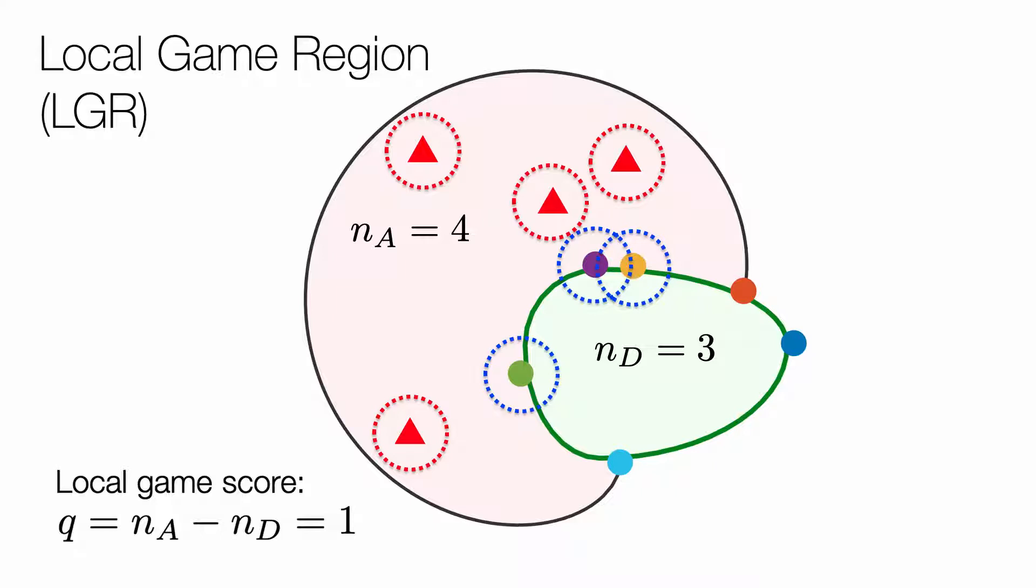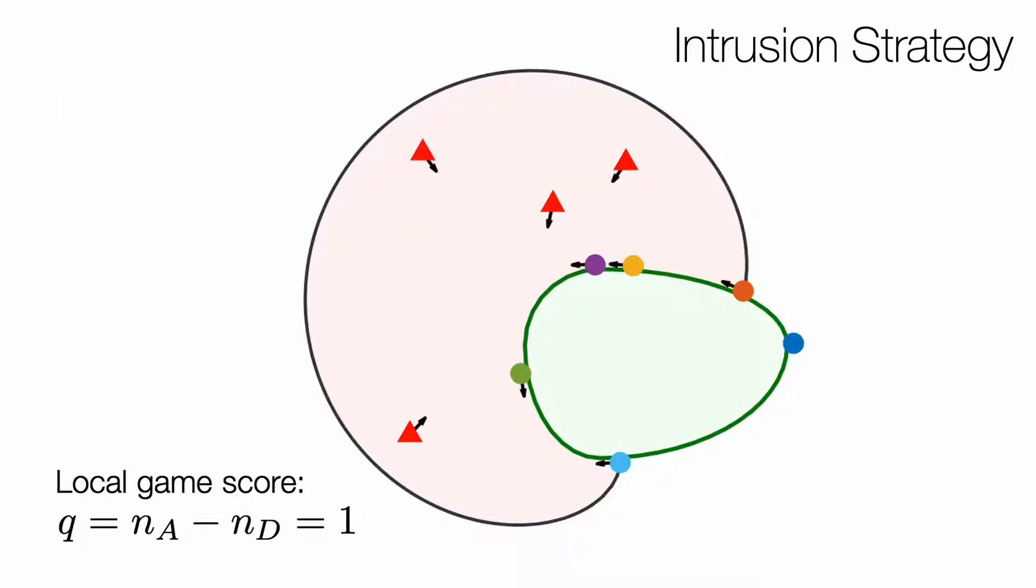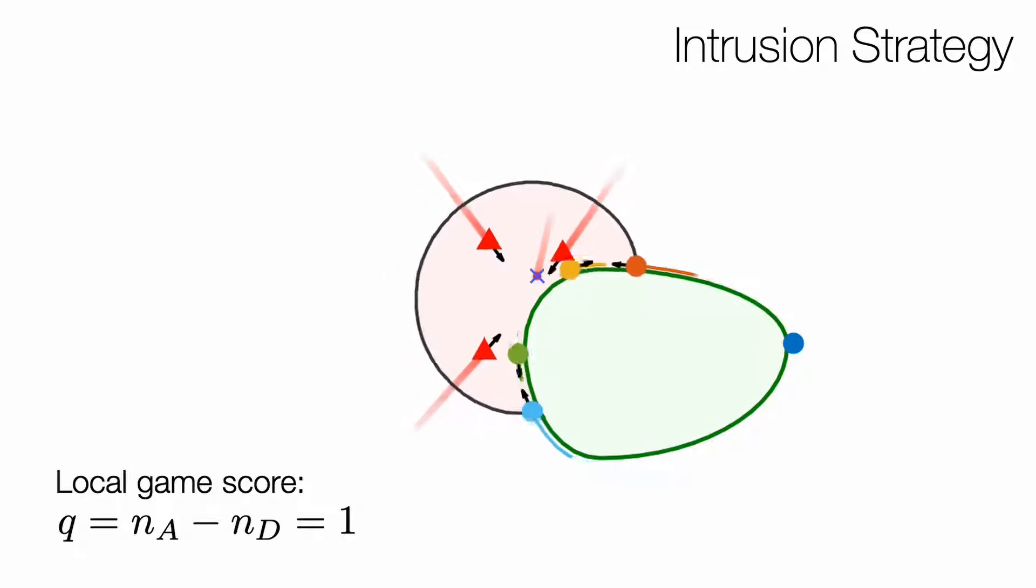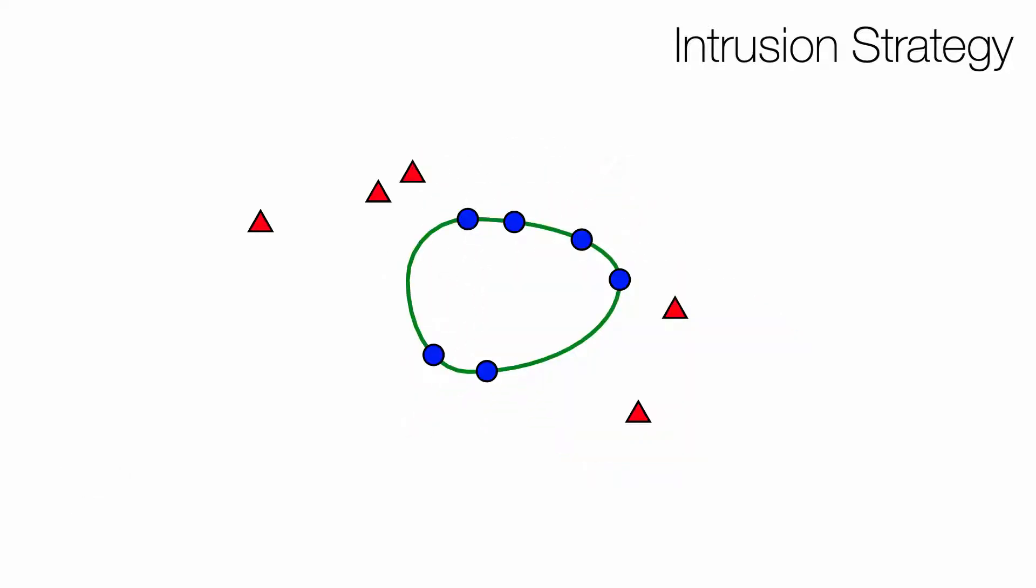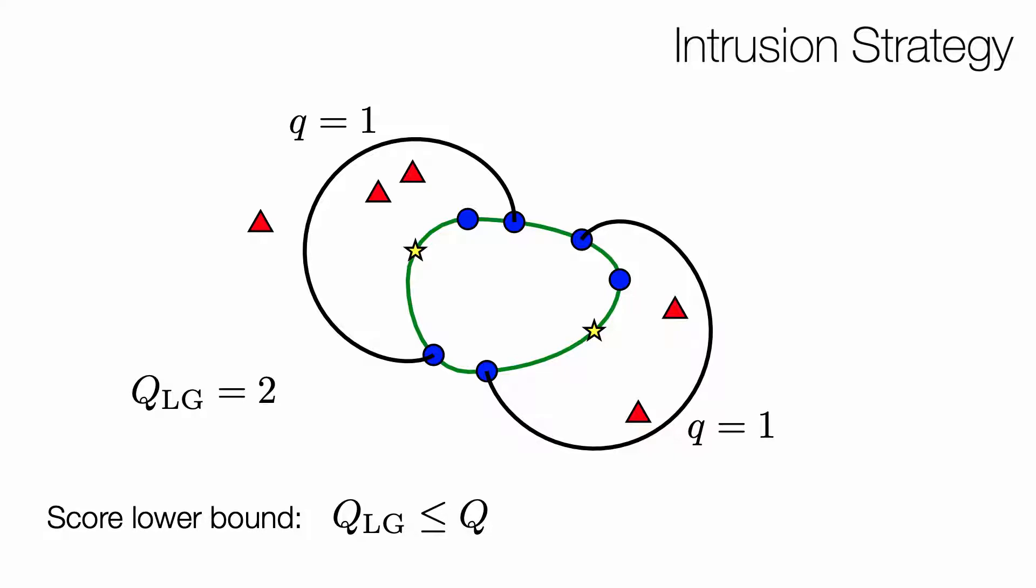The intruder sub-team can guarantee to score this little queue by approaching the midpoint between the defender pair. The intruder team can now consider different selections of the local game regions to maximize their overall score, denoted by QLG, which gives the lower bound on the score.